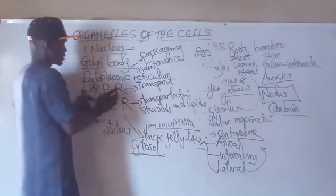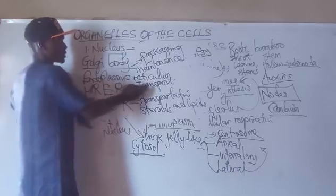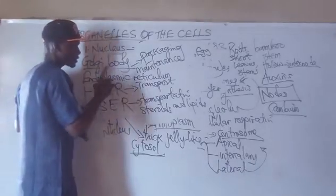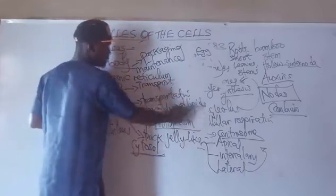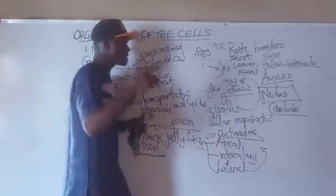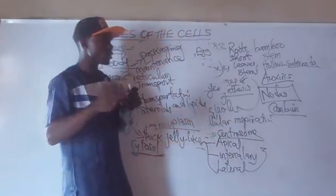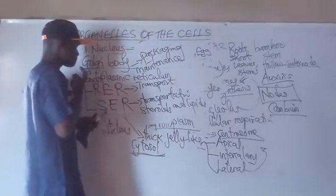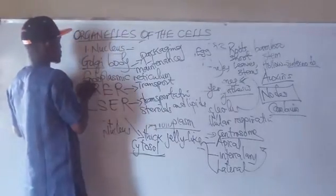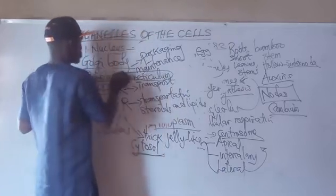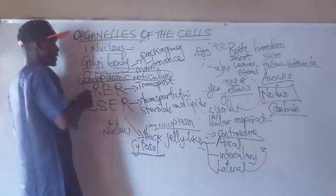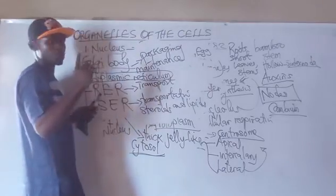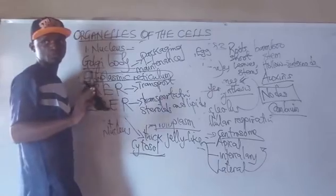The rough endoplasmic reticulum transports already synthesized protein. The smooth transports and synthesizes steroids and lipids. Lipids is the collective name for fats and oils. If asked to state the function of the endoplasmic reticulum generally, you say it is responsible for the synthesis of protein, transportation of lipids, and steroids.